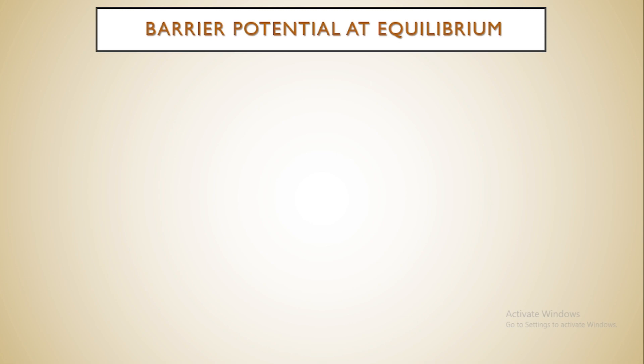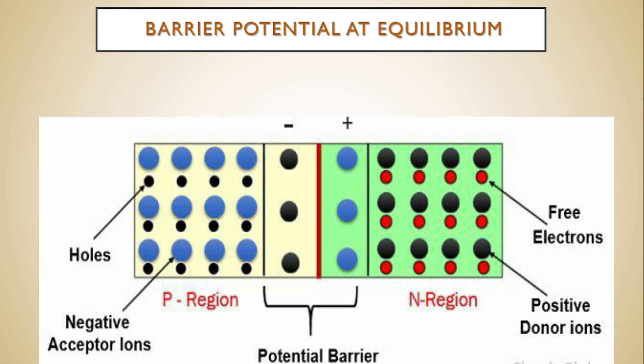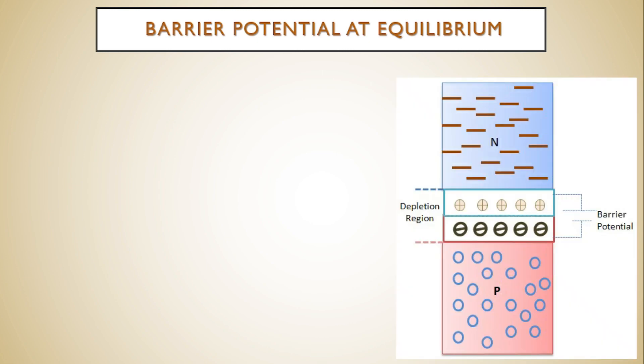Today we are going to study about the barrier potential at the P-N junction. This barrier potential is nothing but the potential difference which is due to the accumulation of immobile charge carriers in each layer across the junction at a certain temperature T — meaning at equilibrium. After finding the barrier potential, we can express the charge concentration, whether electron or hole concentration, in terms of barrier potential.